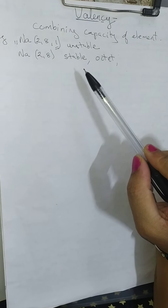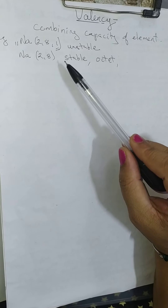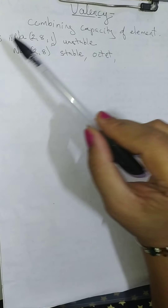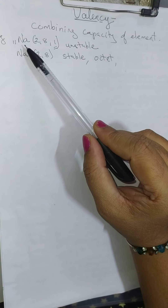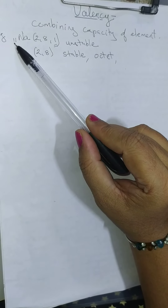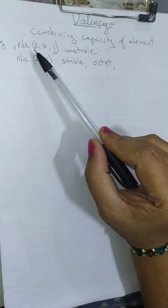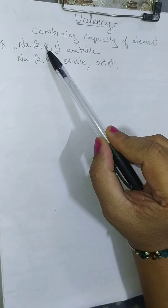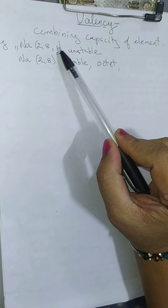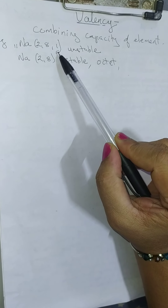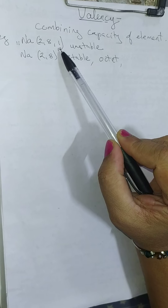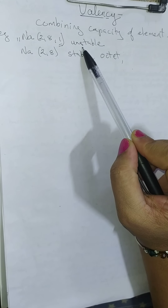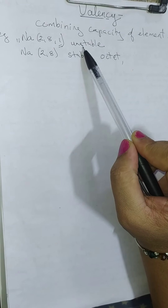Before this, we have studied the electronic configuration. For example, if we take sodium, its atomic number is 11, then its electronic configuration is 2, 8, 1. Its outermost orbit contains only one electron, so it is unstable.